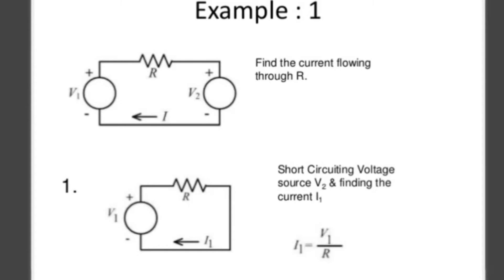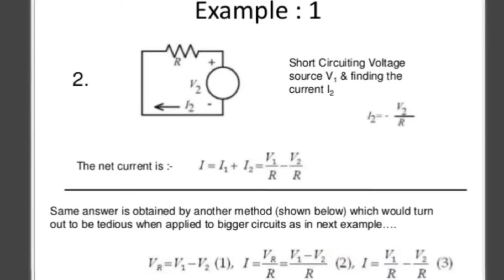A simple example: there are two voltage sources, V1 and V2, and a total resistance R. Find the current flow through resistance R. Step one: V2 will be deactivated by short circuit. Finding current I1 = V1 / R using Ohm's law. Step two: short-circuit voltage source V1, activate V2, find current I2 = V2 / R. The net current is I1 + I2, that is V1/R minus V2/R.